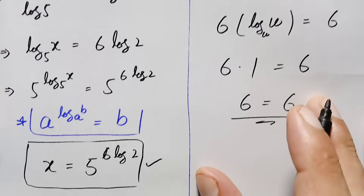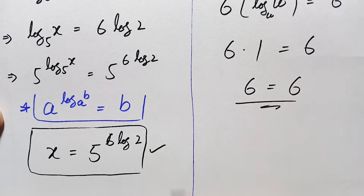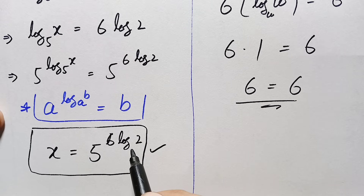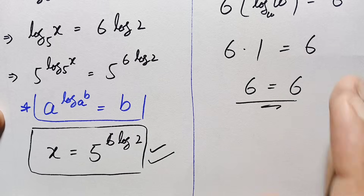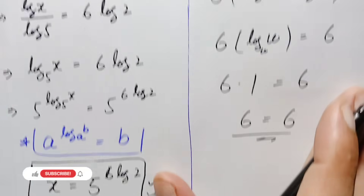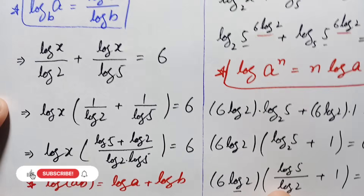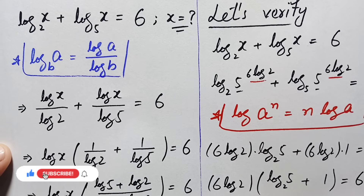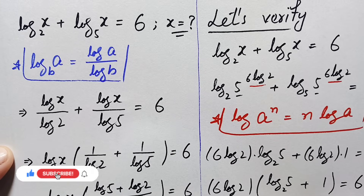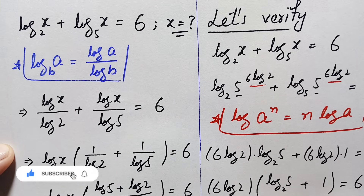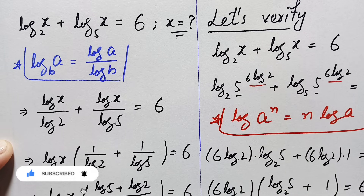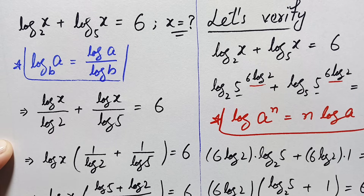So x is equal to 5 raised to the power 6 times log of 2 is the exact and correct value of x in this nice and interesting logarithm math problem. Don't forget to subscribe to my YouTube channel for more interesting step-by-step math videos. Thanks for watching.